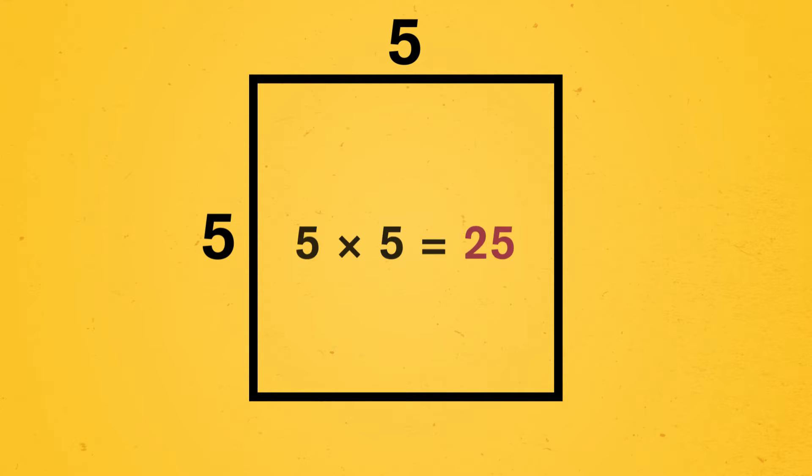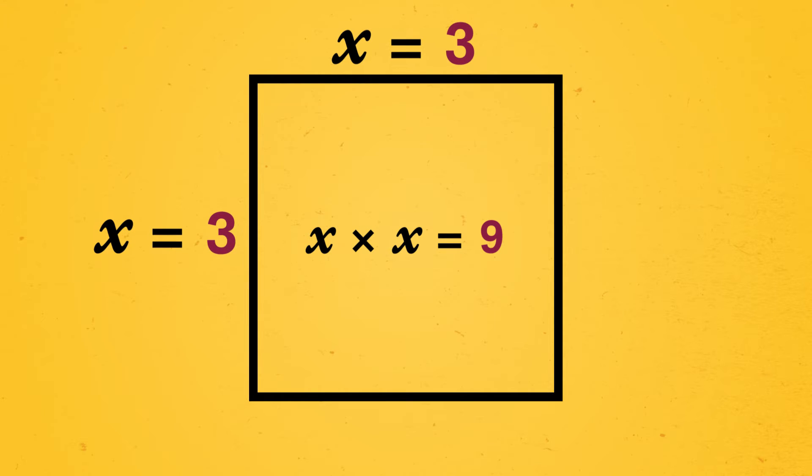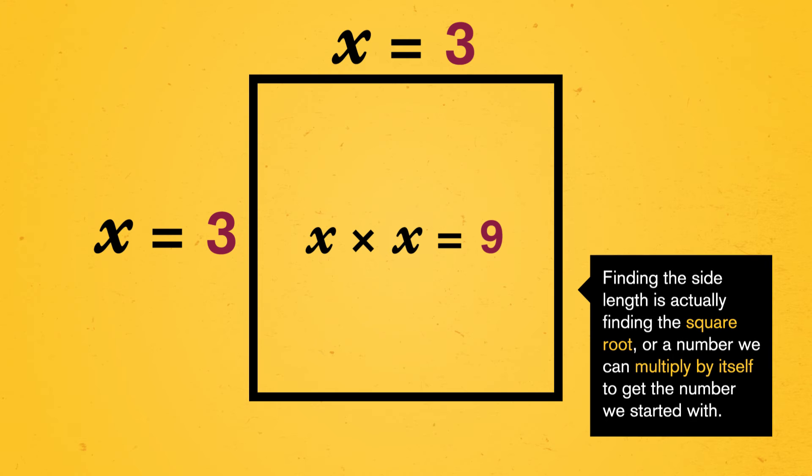If I draw a square with side length 5, my area will be 25. Same with the side length of x, we get an area of x squared. Or we can do this in reverse. If you have a square with an area of 9, its side length must be 3. Finding the side length is actually finding the square root, or a number we can multiply by itself to get the number we started with.